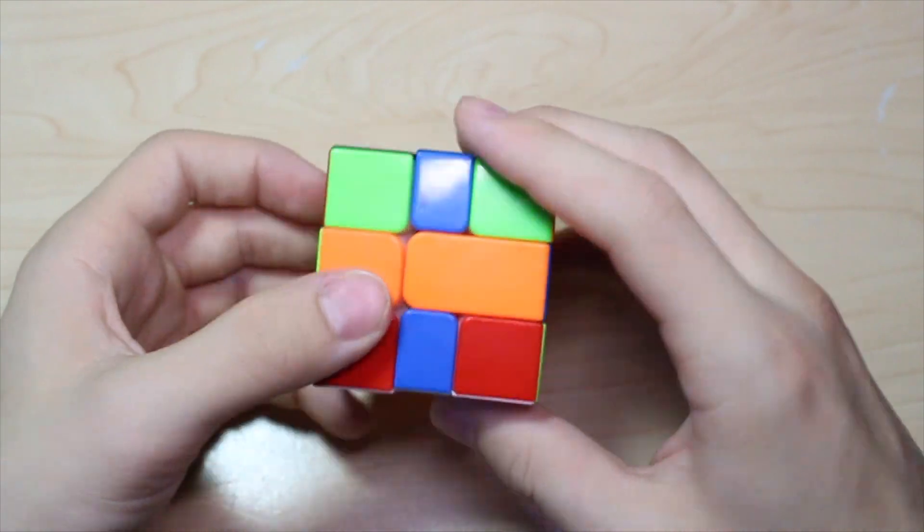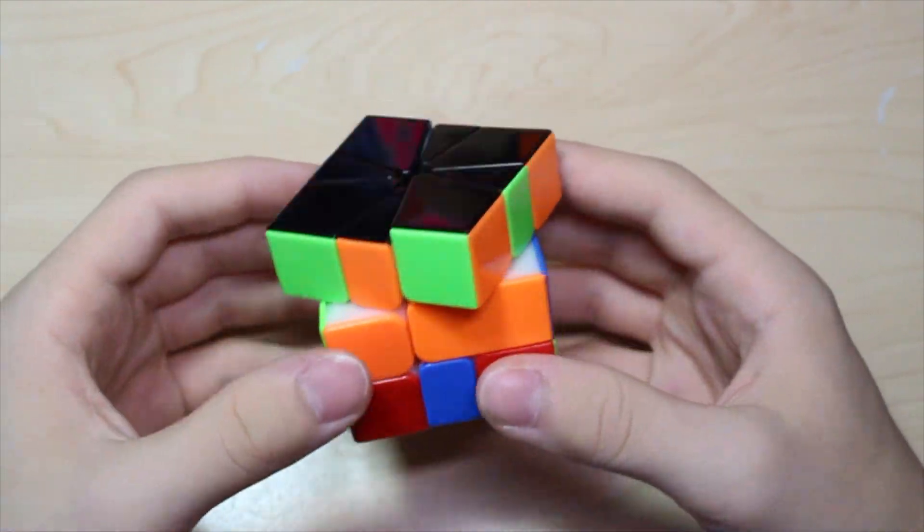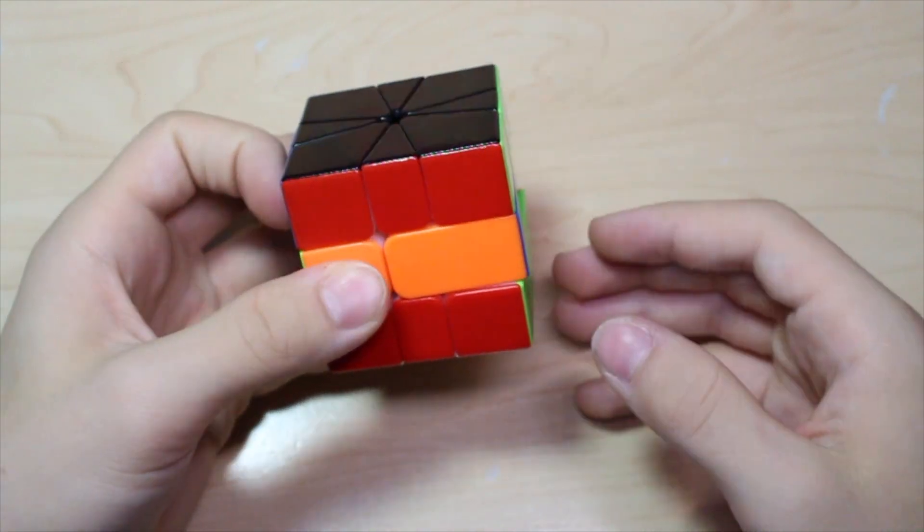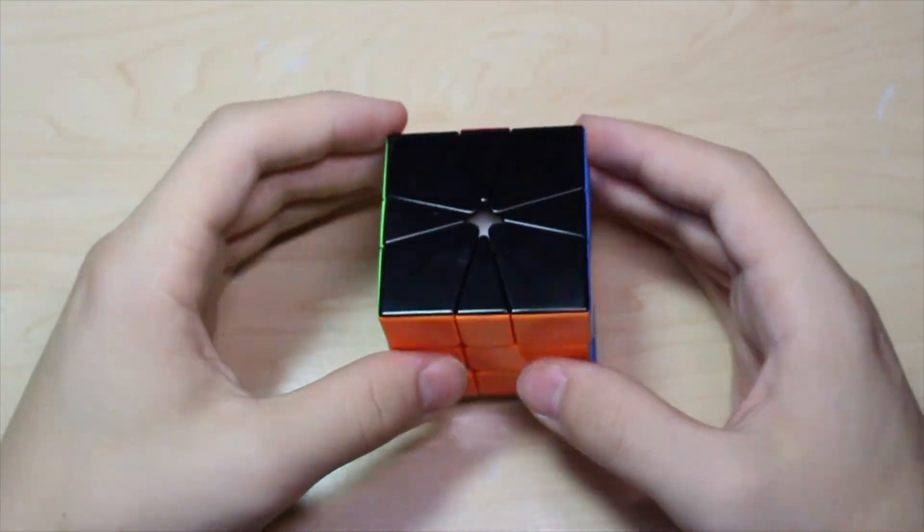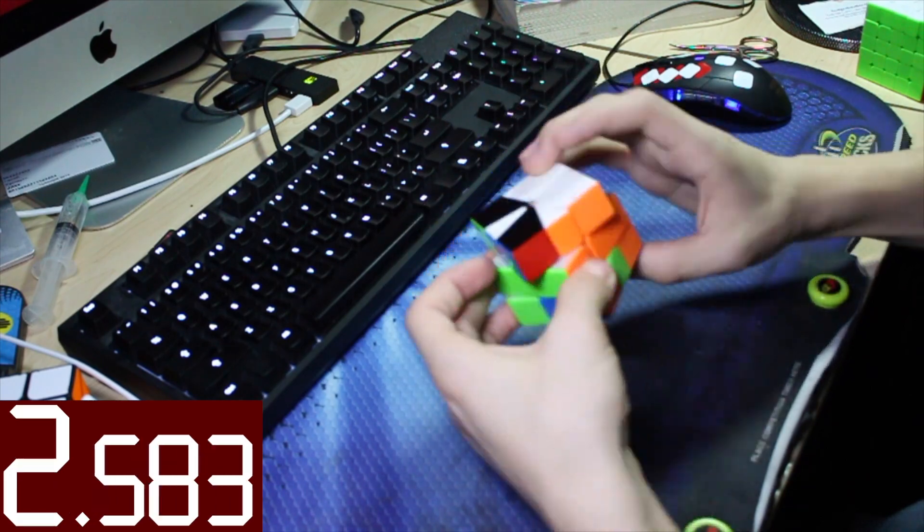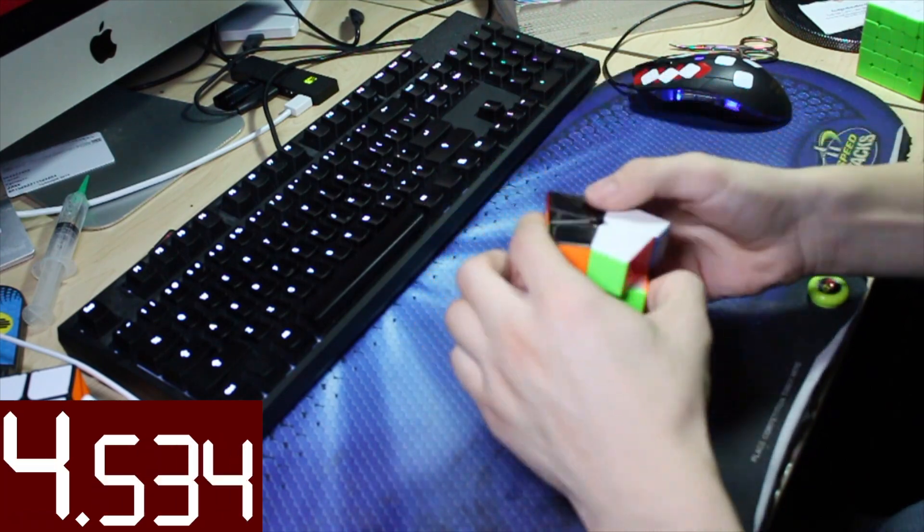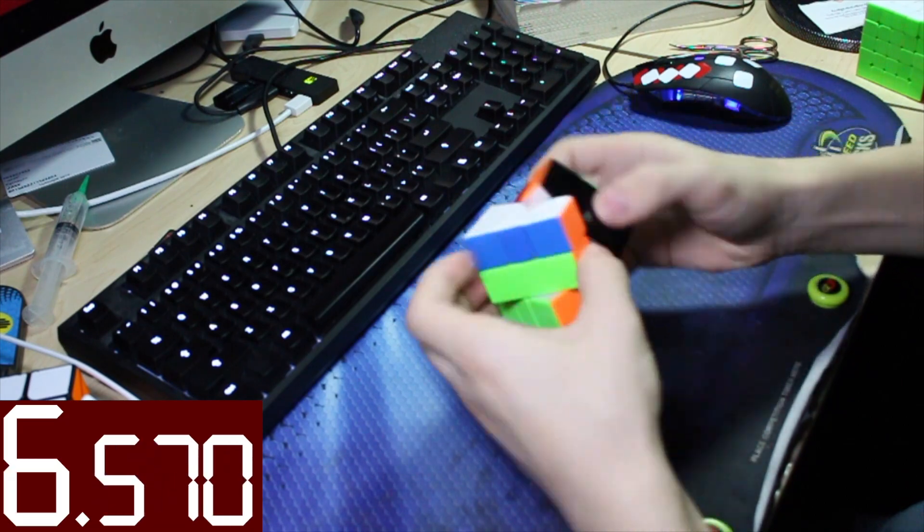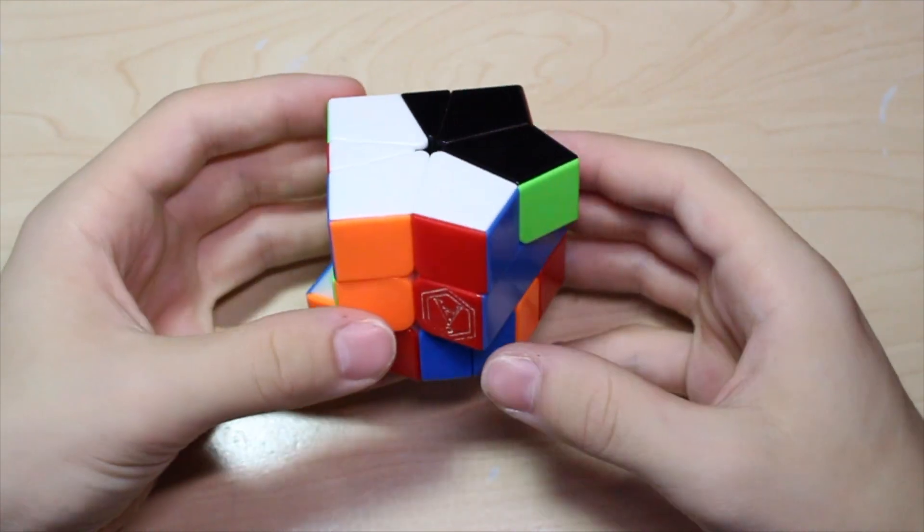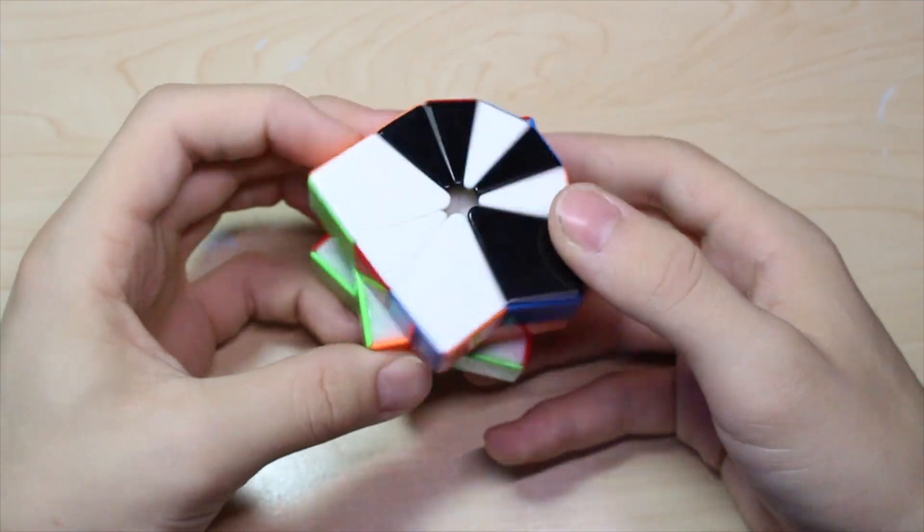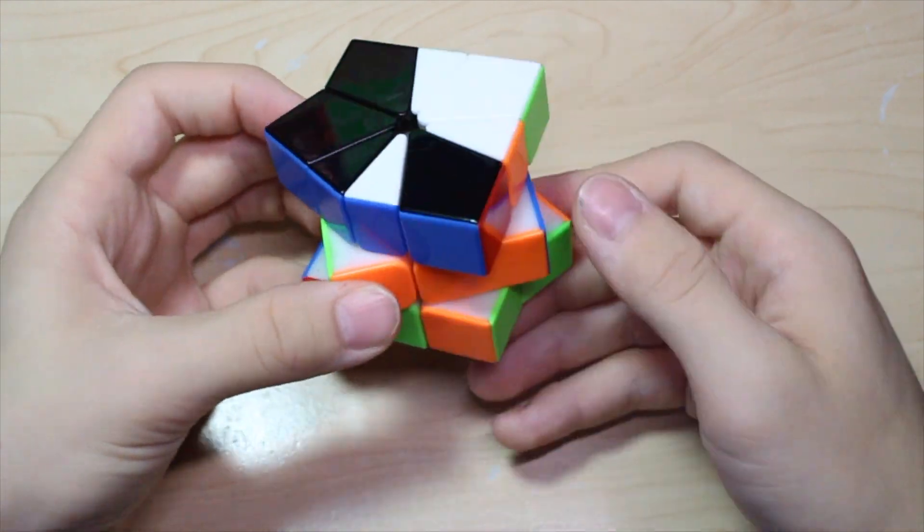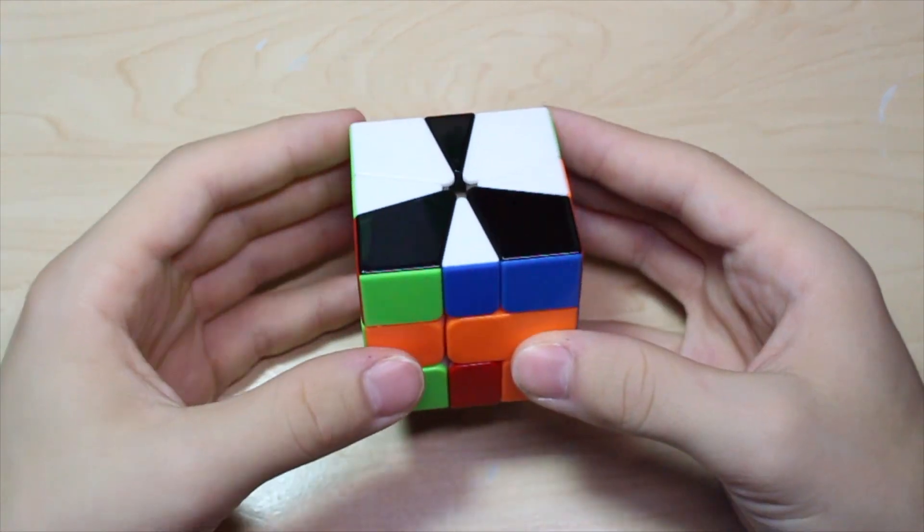And then I just had ZU. So for this next shape I had parity, so I had to do a misalignment. I had to do this, and then CO.